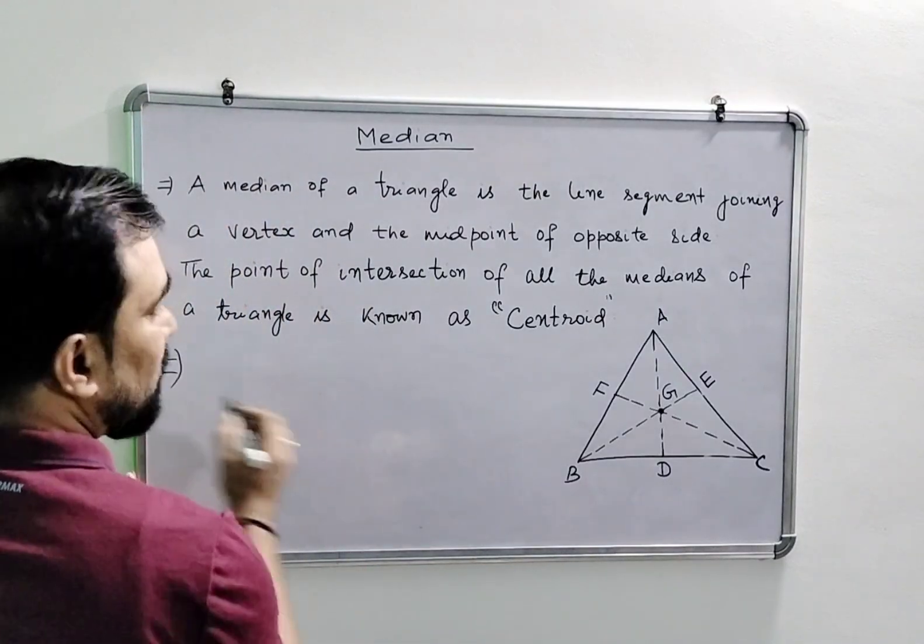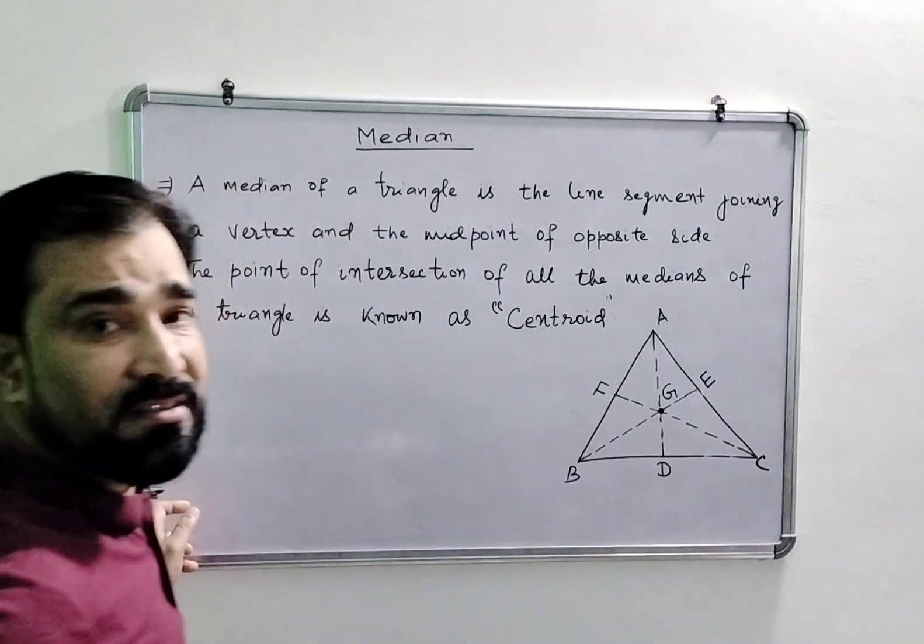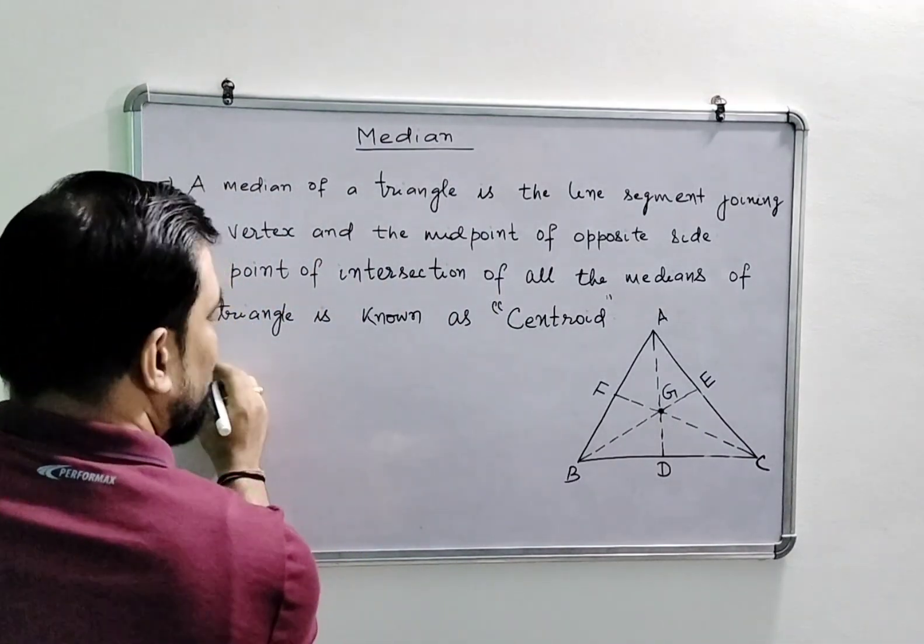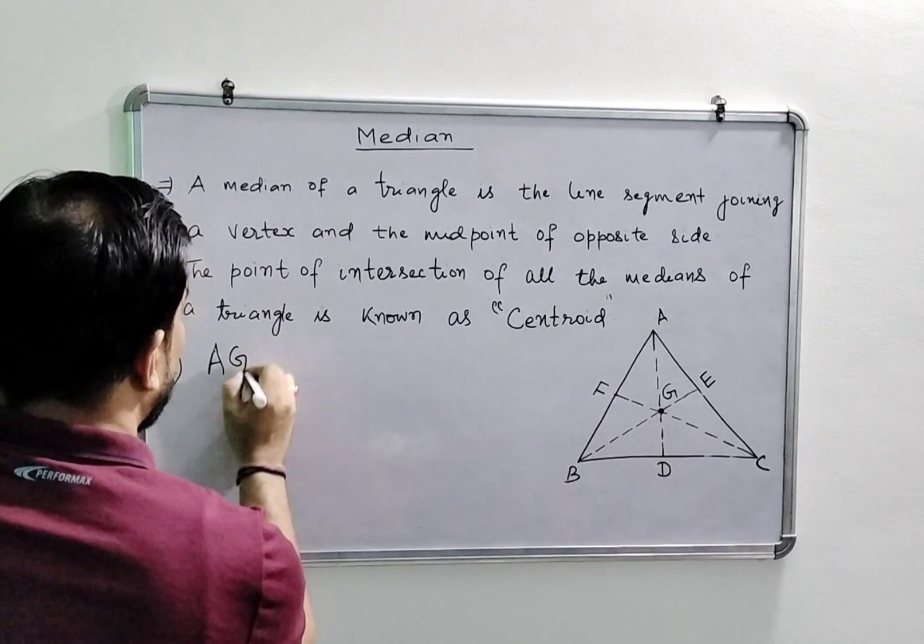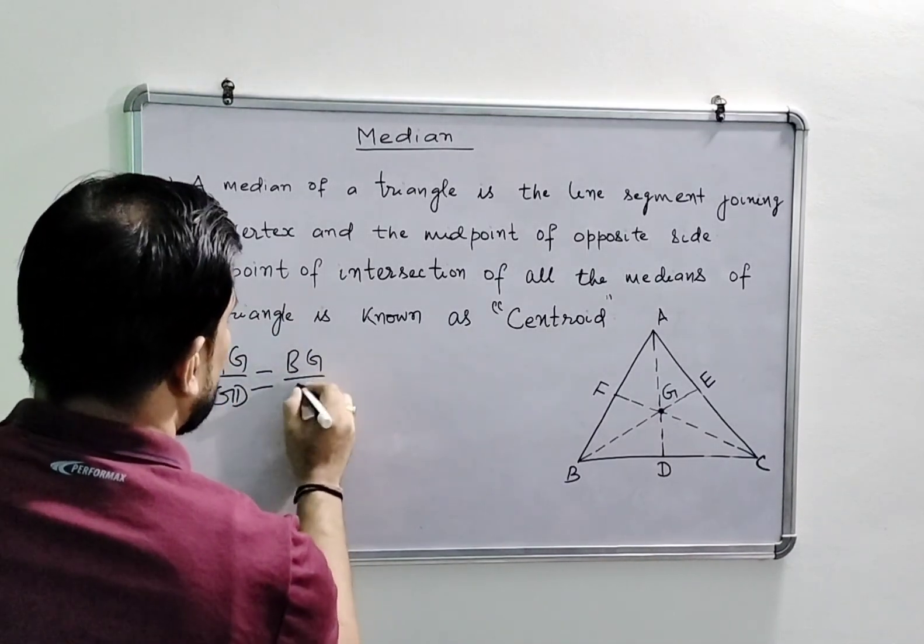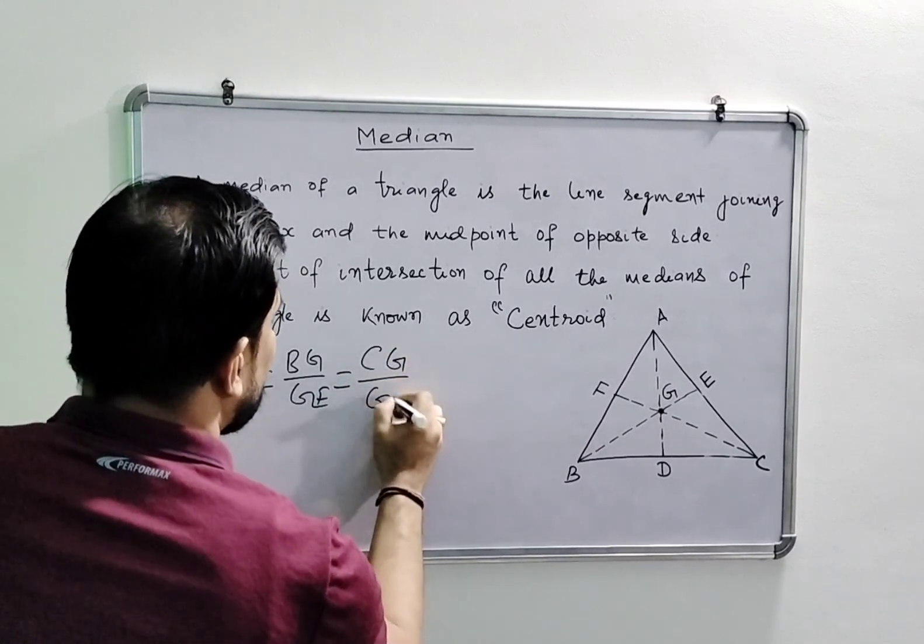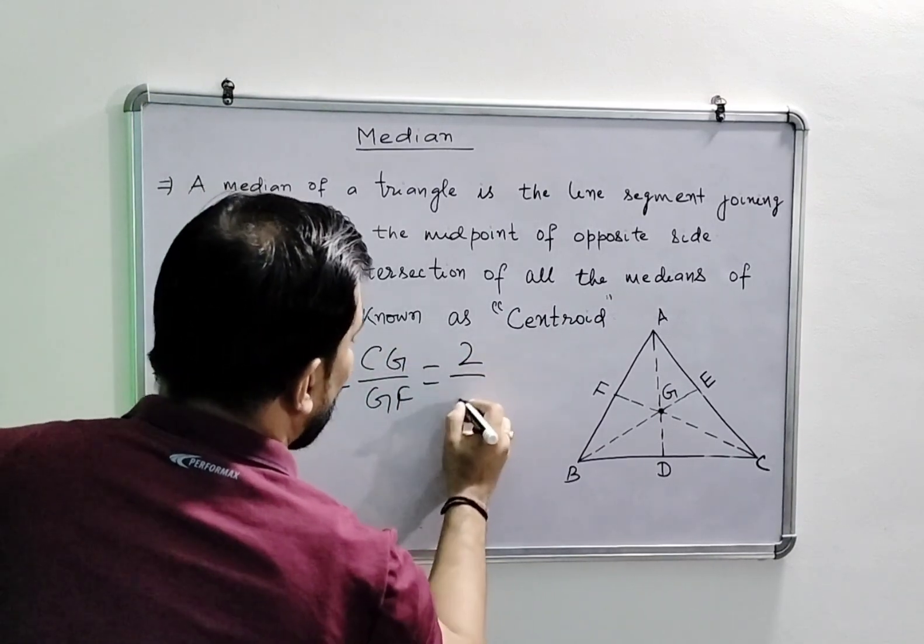The second property is that the centroid divides all the medians in a 2:1 ratio. So we can write that AZ upon ZD will be equal to BG upon GE is equal to CZ upon ZF in 2:1 ratio.